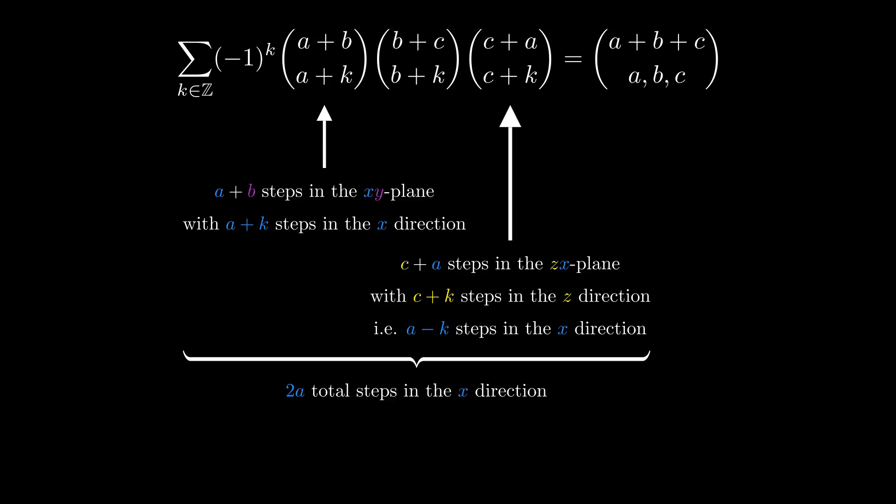That's a lot like our earlier tortured counting of triple paths. But this time, the x steps needn't be exactly half in one path and half in the other. We have a + k in the xy plane and a - k in the zx plane. The pleasant symmetry of the expression means we can repeat the argument for the y steps in the xy and yz planes to get 2b total steps in the y direction. And of course repeat it again to get 2c total steps in the z direction. So the whole left-hand side counts triple paths with some basic marginal conditions.